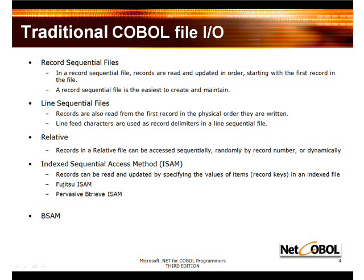Also supported is the relative file, and records in a relative file can be accessed sequentially, randomly, by record number, or dynamically. On the mainframe, you'd know this as RRDS. Many of you have probably worked with VSAM files. In the PC world, the index sequential access method, or ISAM file, is its equivalent. Records can be accessed by specifying the values of items — those would be the record keys — in an indexed file. There are actually two different types of ISAM files supported by NetCobol for .NET: the Fujitsu ISAM file and the Pervasive Btreev ISAM file. You should be aware that there are some limitations to the Fujitsu ISAM, which I'll talk about momentarily.